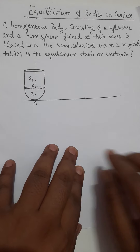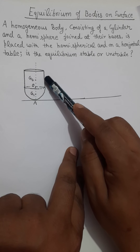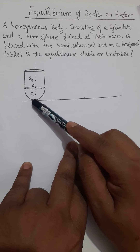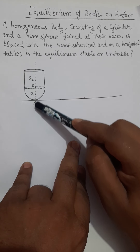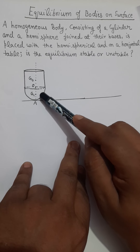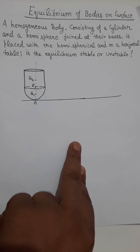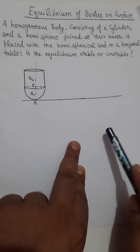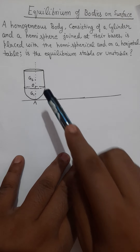As you can see in this figure, you have a body which is a hemispherical object joined with a cylindrical object. They are placed on a flat horizontal surface. This orientation of the object is the equilibrium orientation — the object is perfectly in the state of equilibrium. We have to investigate whether this equilibrium is stable, unstable, or neutral equilibrium.